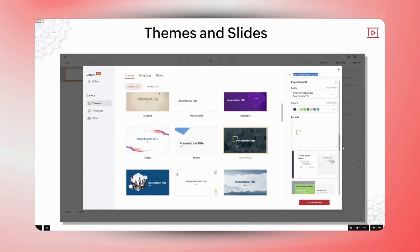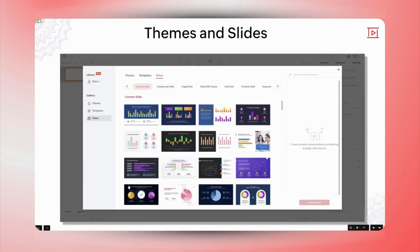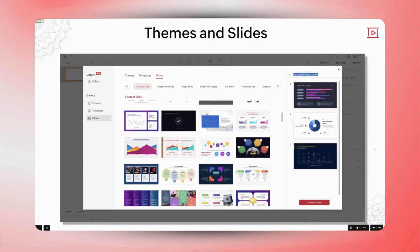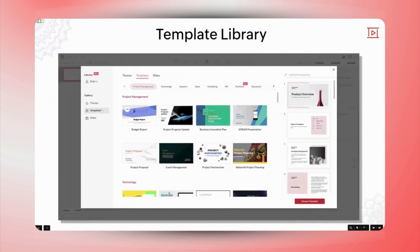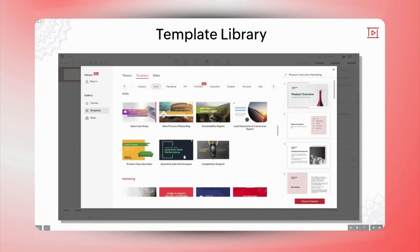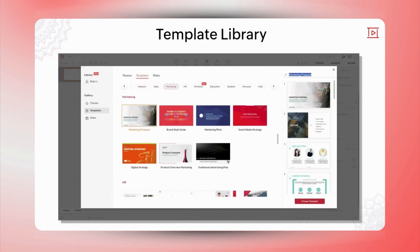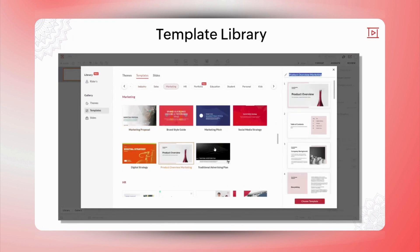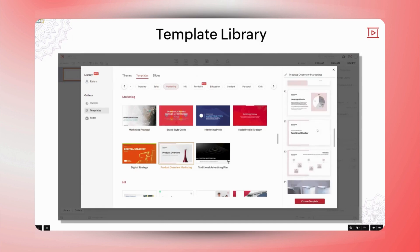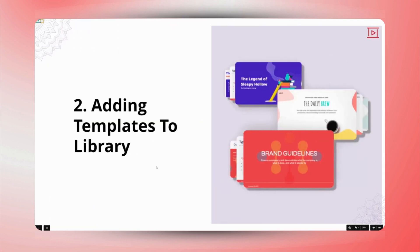I see that Zoho Show lets you pull content directly from your library, making it easier to add previously saved slides or media. This allows you to customize content using Show's formatting and design tools without needing to rewrite everything from scratch. You can also add templates directly to your presentation from the library. Zoho Show offers a wide range of templates suitable for all industry needs. And do I have an option to add my preferred templates to the library for easy access?